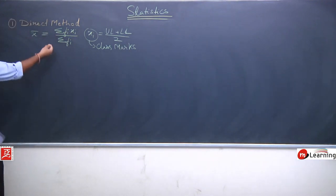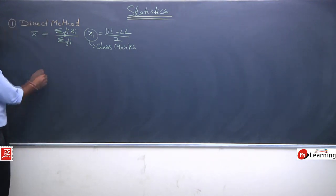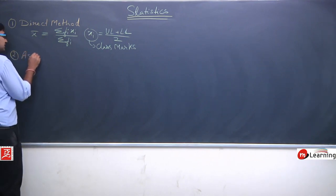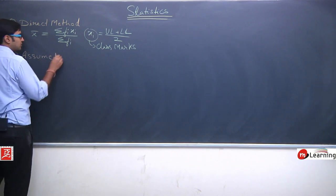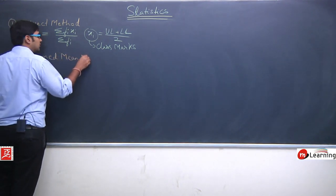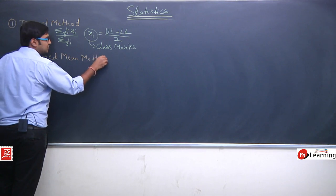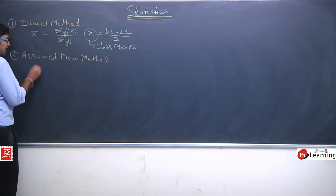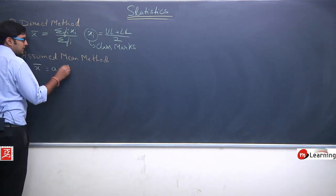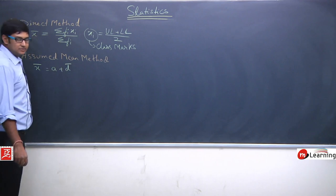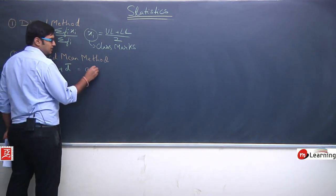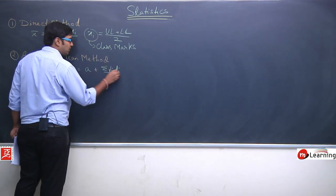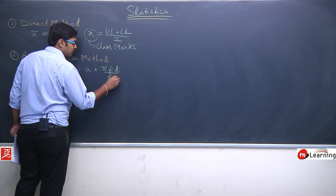This is a very simple method, but since it involves a lot of calculation, we try to reduce the calculation by using the next method, which is the assumed mean method. In the assumed mean method, the mean x bar equals a plus the mean of deviation, where the mean of deviation is summation f_i d_i upon summation of f_i.